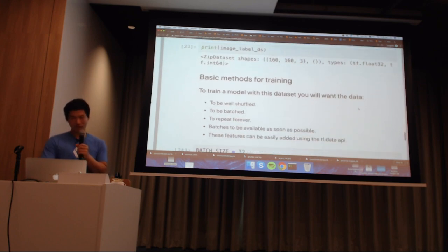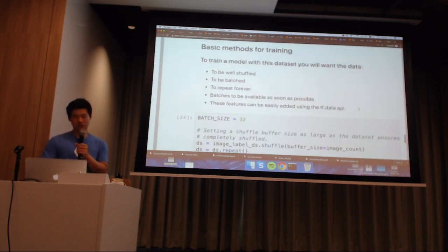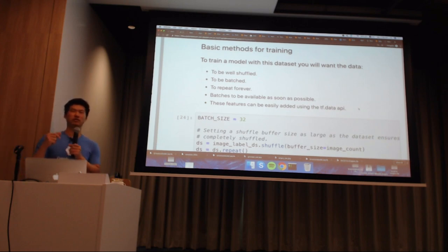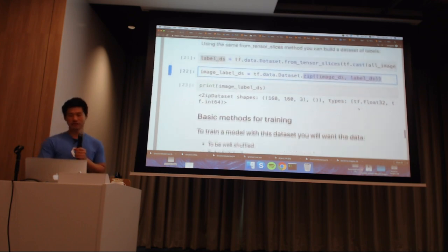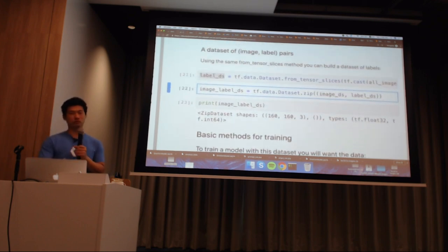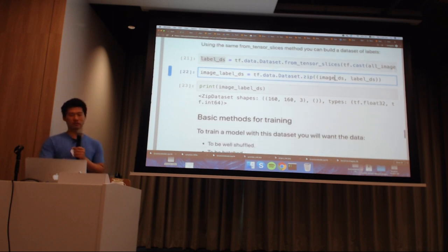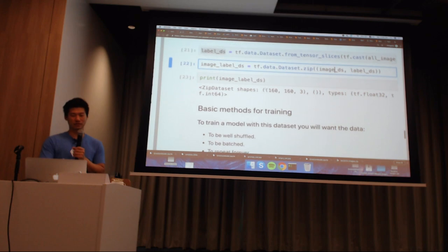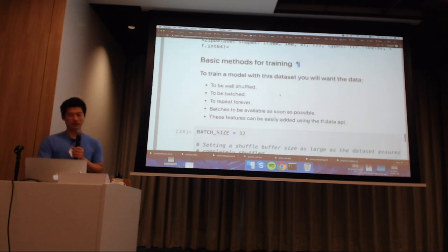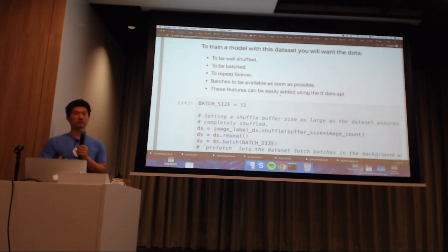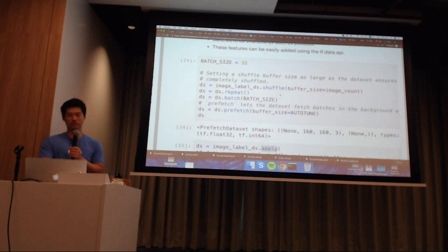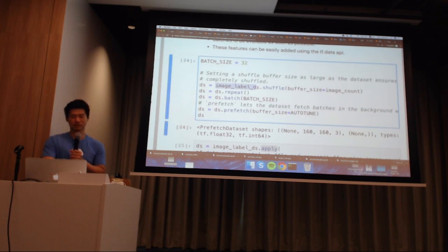This is basically the preprocessing part of the images. As long as you start with a list of your folders and a list of your labels, you can zip them together into this tensor zip dataset format and then pass them into a model. Just to show you that it works - we have our image and label zip dataset.